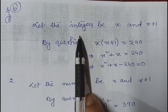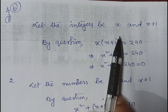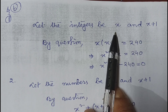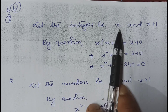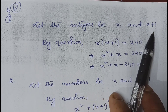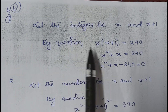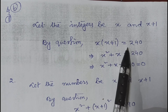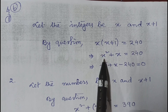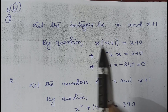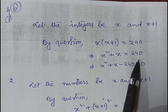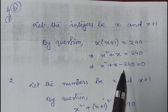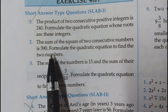The product of two consecutive positive integers — let the numbers be x and x+1. Since they are consecutive, if one integer is x, the other will be x+1. According to the question, their product is 240, so x(x+1) = 240. Expanding: x² + x = 240, giving x² + x - 240 = 0, which is the required quadratic equation.